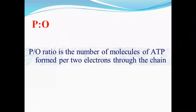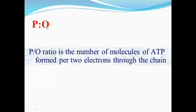So what is the phosphorylation and oxygen ratio — the P/O ratio? It is the number of molecules of ATP formed per two electrons transferred to the chain. In other words, when oxygen molecules accept two electrons, what is the resulting ATP production? That is how much ATP is produced per two electrons.